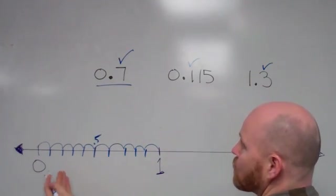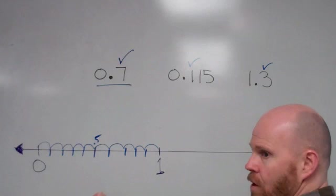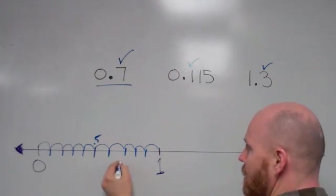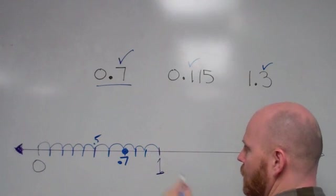This 0.7 means I need to move over 7 of those 10 equal-sized spaces. So right here is where the 0.7 would go.